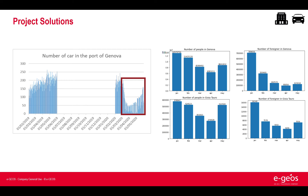Finally, here are examples of indicators for the road movements and urban expansion domains. In particular, these analyses have been computed on anonymous mobile phone data, traffic, and satellite data. On the left it is evident the decrease in the number of cars during the COVID-19 outbreak in Genoa port, while on the right the plots show the decrease in the number of people in both the ports of Gioia Tauro and Genoa.